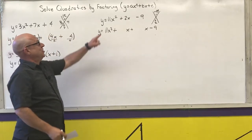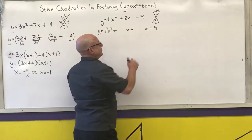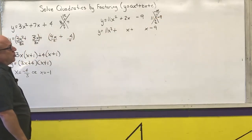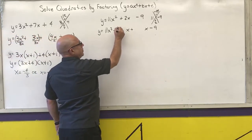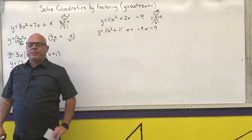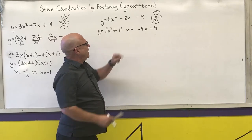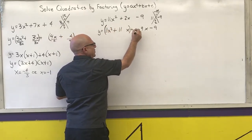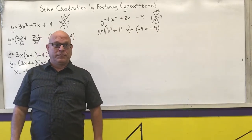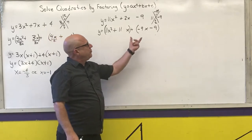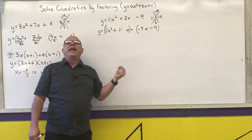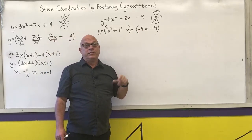Notice that 11 minus 9 is 2, so I'm going to put the 11 with the 11 and the negative 9 here. This is the reason I do the setup first — because when I put parentheses around the first two terms and parentheses around the last two terms, I always have that plus sign in between. Remember from the factoring by grouping lesson: if the first term of the second group has a negative in front of it, you pull that negative out when you find the greatest common factor.